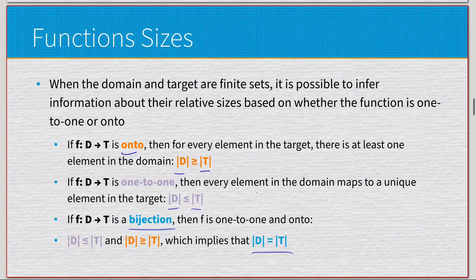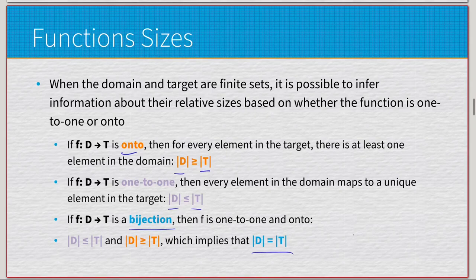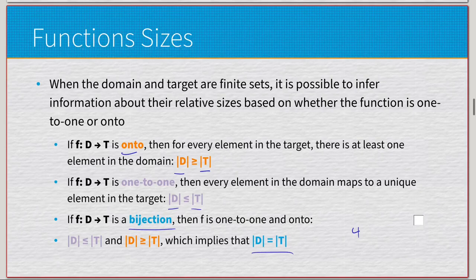So for onto, |domain| ≥ |target|, and for one-to-one, |domain| ≤ |target|. The only time we can have a bijection is when both properties hold, meaning the cardinalities of the domain and target must be equal. We also know that for an onto function, the range and target must be equal in size, so in a bijection the domain, target, and range all have the same cardinality.